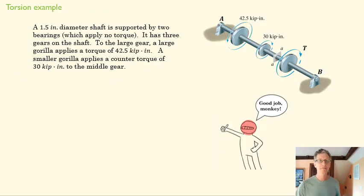So let's do a little problem here. So here we have a 1.5 inch diameter shaft. It's got a bearing at A and B, and then it has three gears here. And a torque is being applied to each of those torques by a large gorilla, of course. Why wouldn't you have a gorilla applying some torques to your shaft here? And so we've got a torque here, and we've got another torque here, and we're going to try to explore what this torque T has to be.